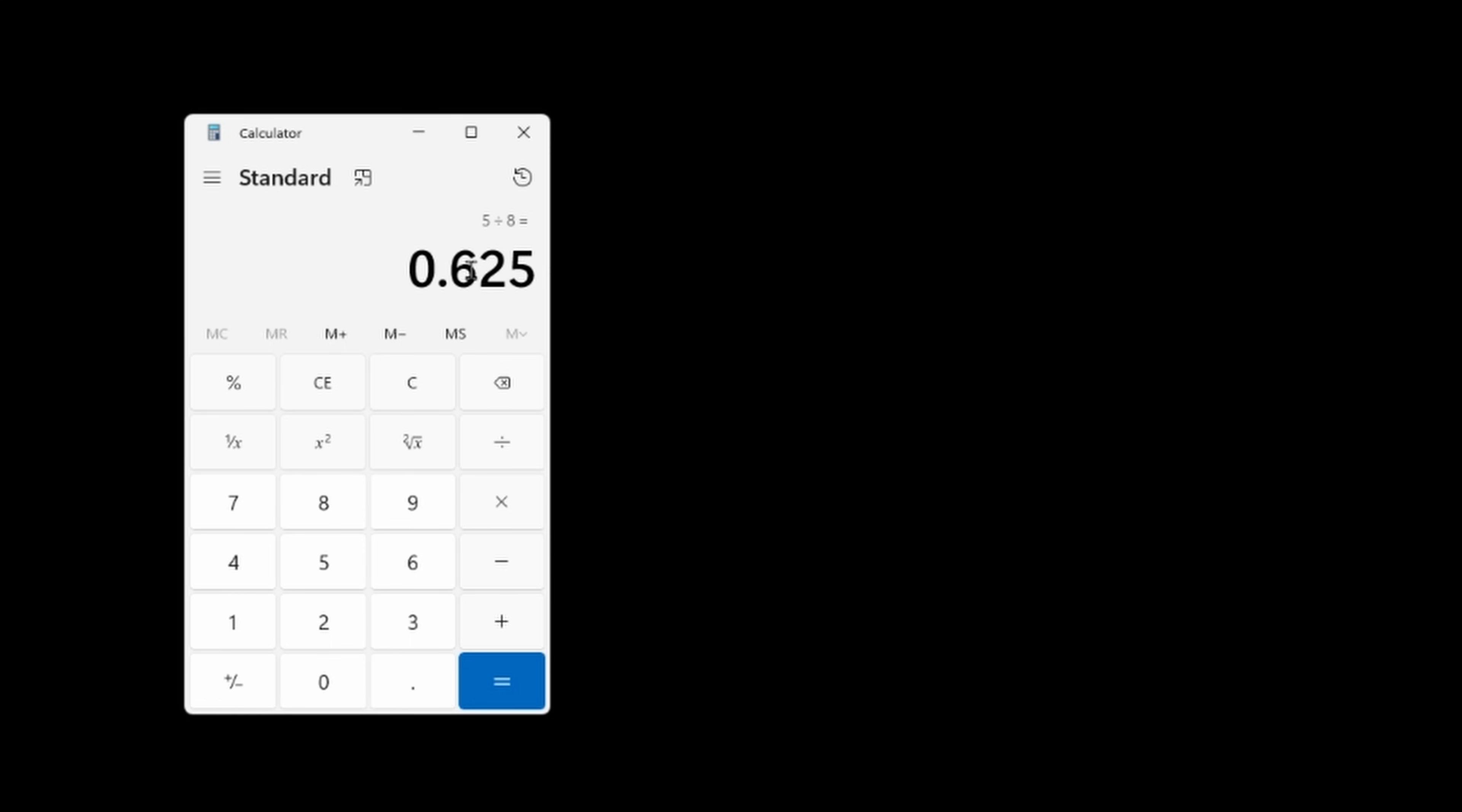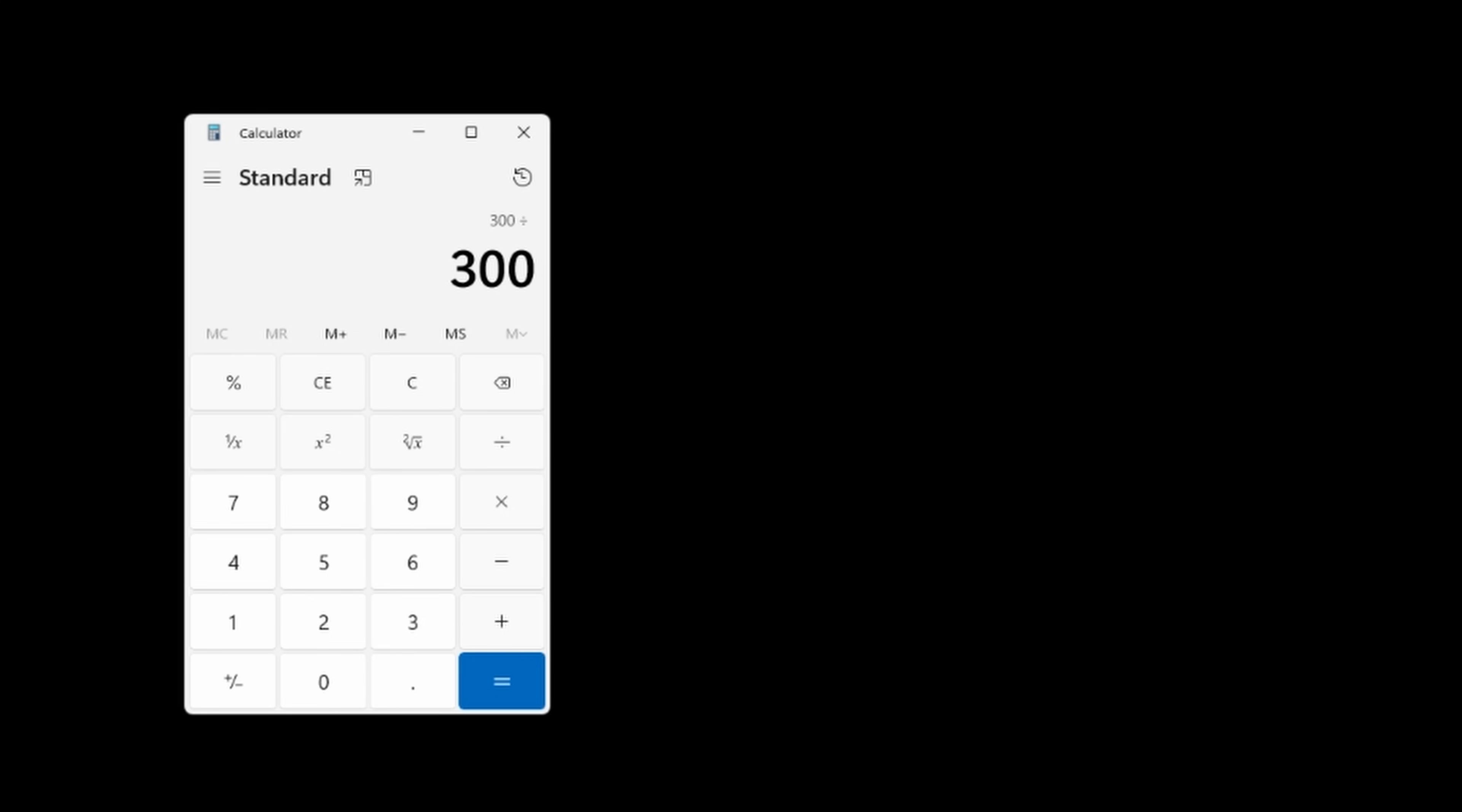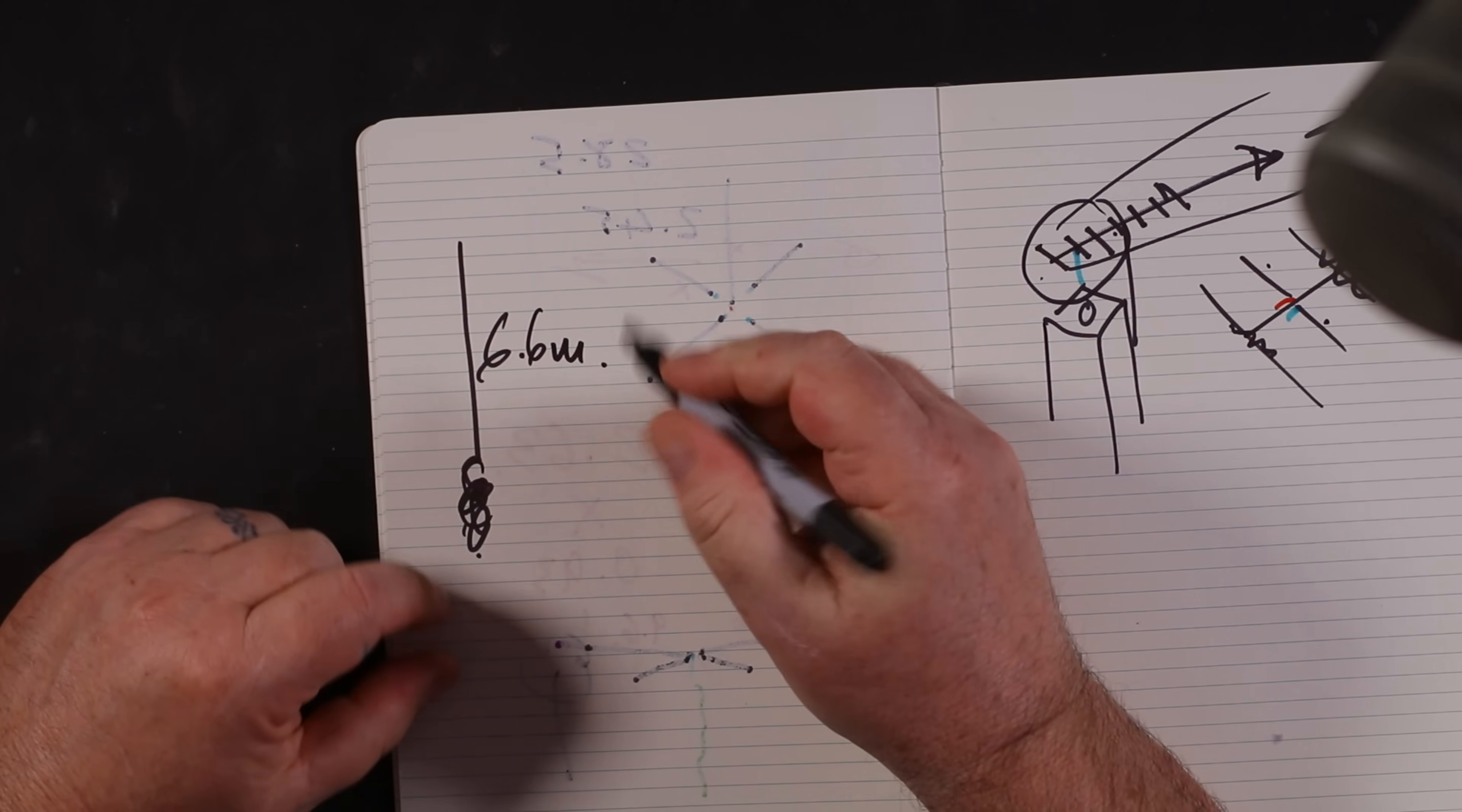So if we do five divided by eight, it's 62.5% long. So 62.5%.